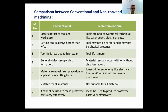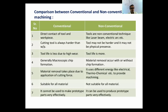One more important difference is that conventional machining processes are suitable for all types of materials. Non-conventional processes are not suitable for all types of materials. For example, if we are using laser beam, then it will not be suitable for all types of materials. But a hard cutting tool will be applicable for all types of materials.